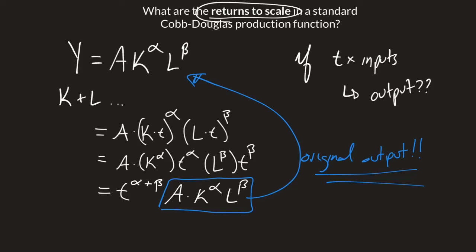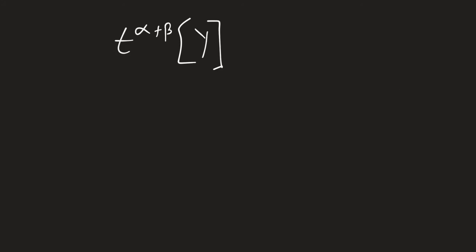So what that means is when we multiply our inputs by a certain amount t, our output ends up being multiplied by t raised to the alpha plus beta. So what we have here is t raised to the alpha plus beta multiplied by our output. When we multiply our inputs by some amount t, our output Y is multiplied by t raised to the alpha plus beta.